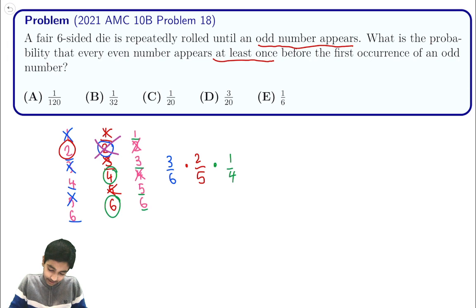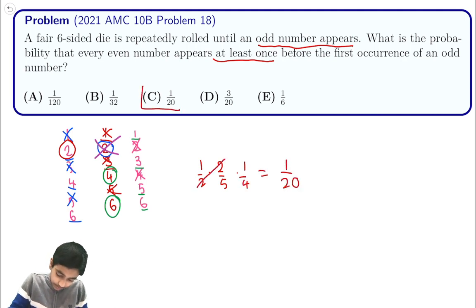And this gives us, after canceling, 3/6 or 1/2 times 2/5 times 1/4, which is equal to 1 over 20. And that is the answer for this problem.